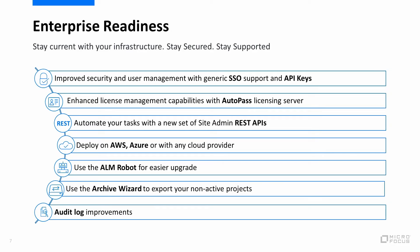On the administrative side, we improved the security and user management, introducing new support for single sign-on and API keys, which helps you to control access to the ALM server from the API layer. We improved the license management with the integration with AutoPass licensing server, which helps you organize and manage your product licenses, server users, and client users. We also productized the site admin REST API, which helps administrators automate project maintenance tasks.